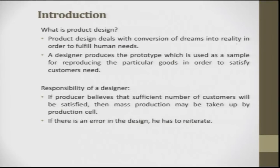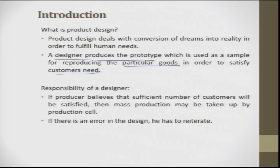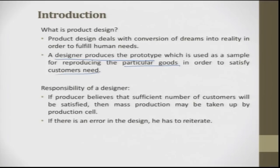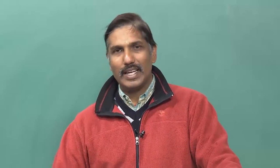A designer produces first a prototype, and this prototype is studied several times, customer feedback is gathered, and then he tries to freeze the design for mass production. A designer's responsibility is to produce a prototype and freeze it such that he can make goods for customer needs — to make sure mass customization happens. He produces a sufficient number of prototypes, gets customer satisfaction, and then freezes the production drawings or manufacturing process such that the process of producing is repeatable. If there is an error, he goes back, reiterates, and starts again.